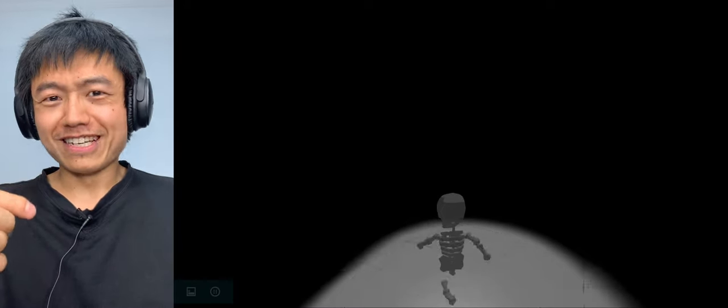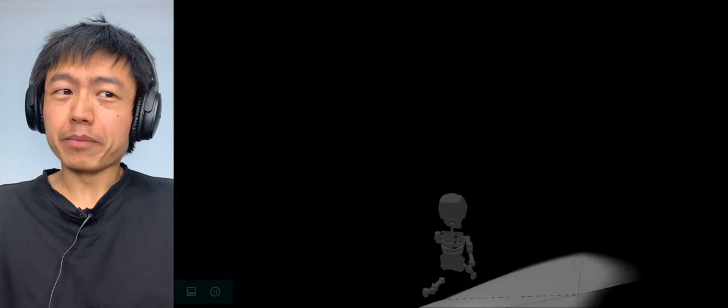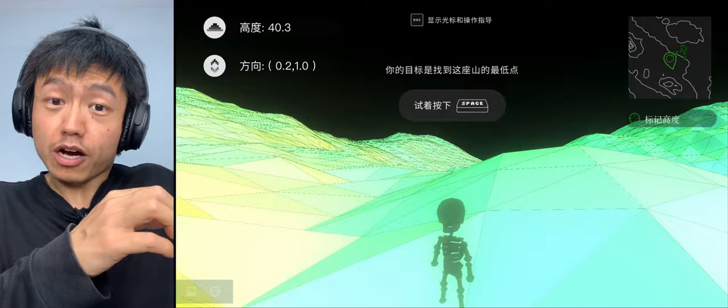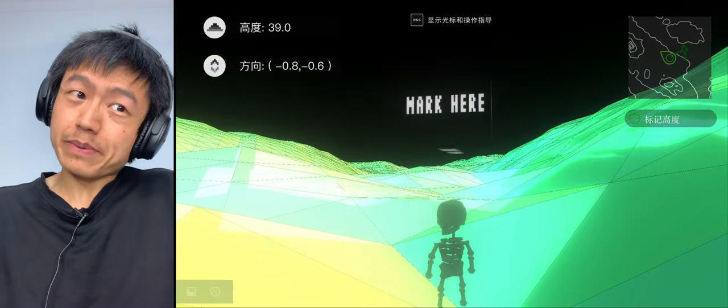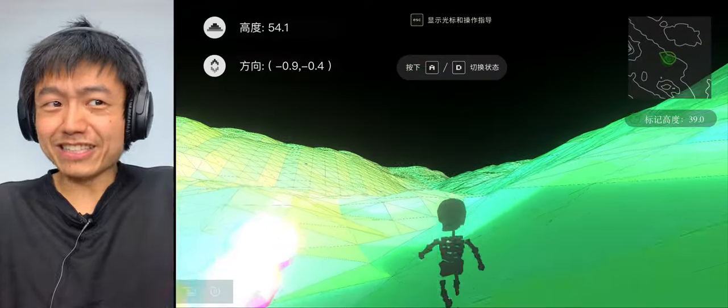At the beginning of this episode, let's play a game. In the game, we play a silicon man. The goal of this game is to find the lowest point of the mountain. Press the space bar to mark my current lowest point and its height.